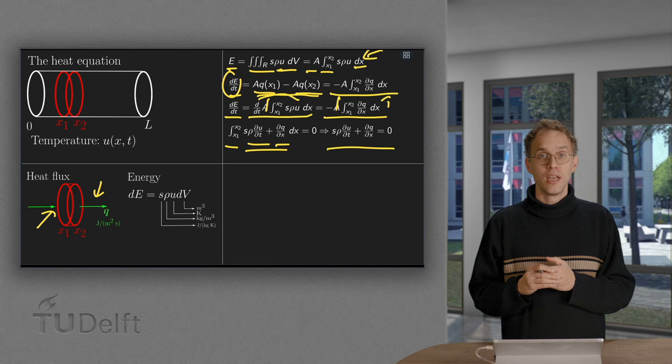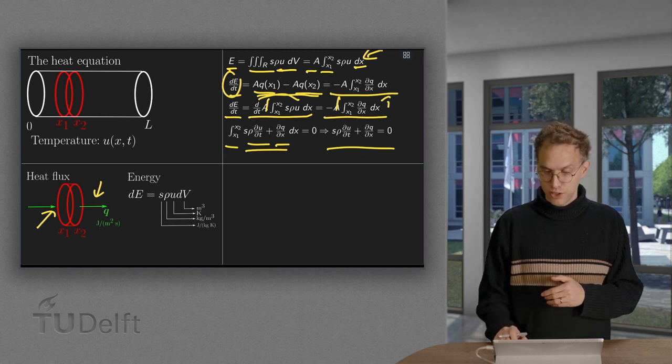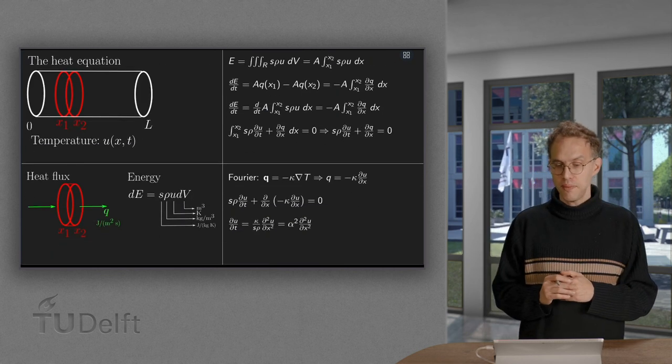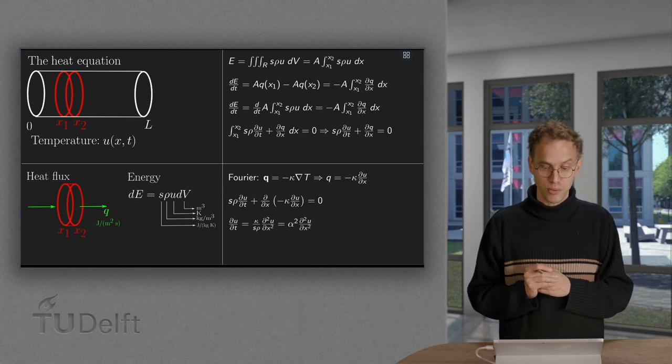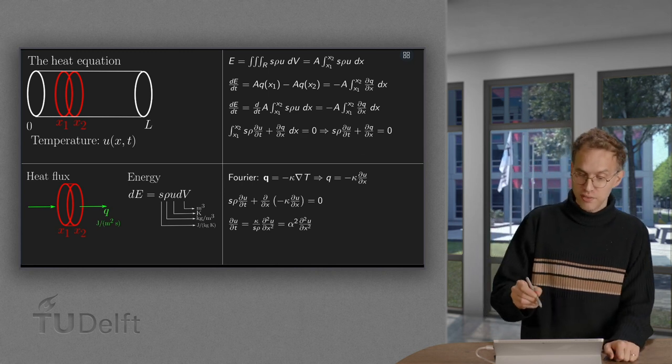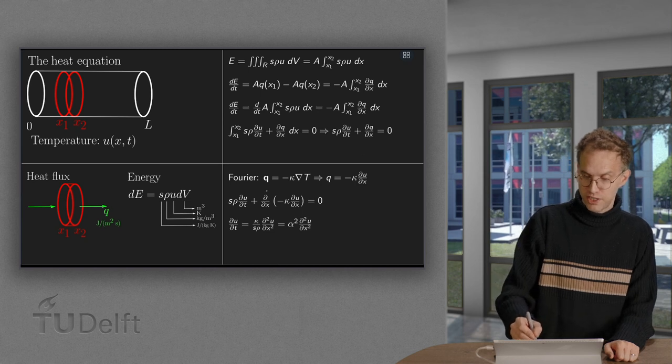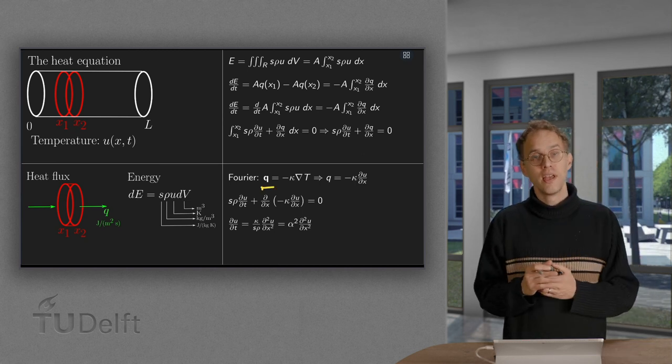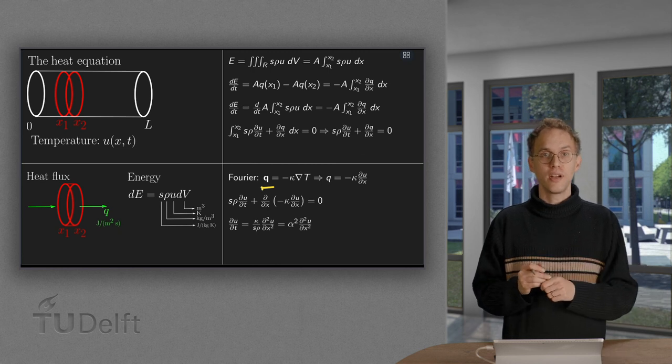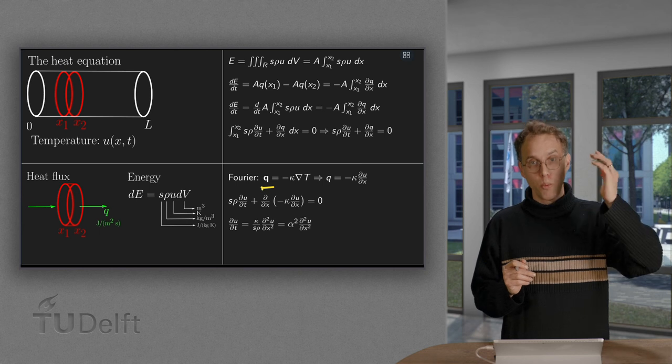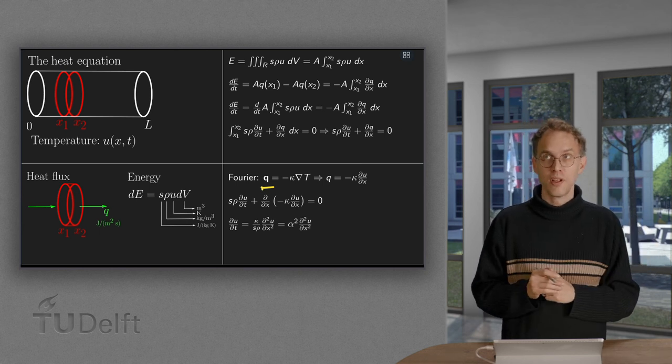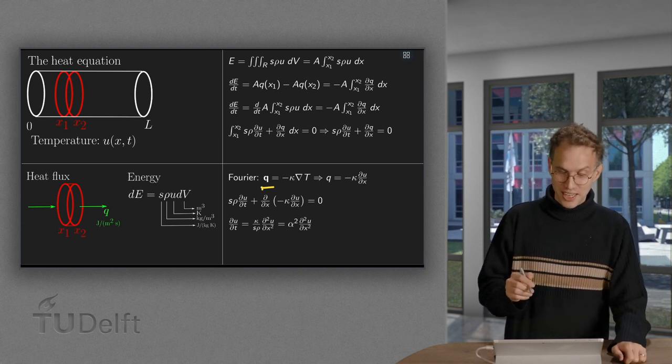But now, still, there is an unknown function Q. So, next step, we have to express our flux Q in terms of U. For that, we use the law of Fourier, which says that the energy, the heat flow, is in the other direction of the temperature gradient. So, heat flows from warm to cold, which agrees with our intuition.